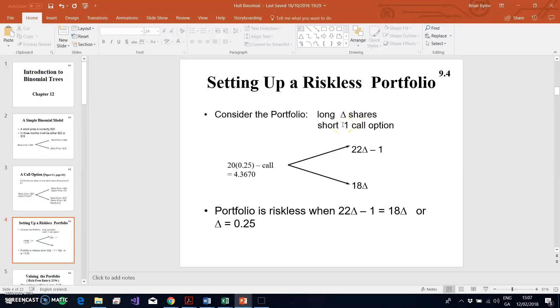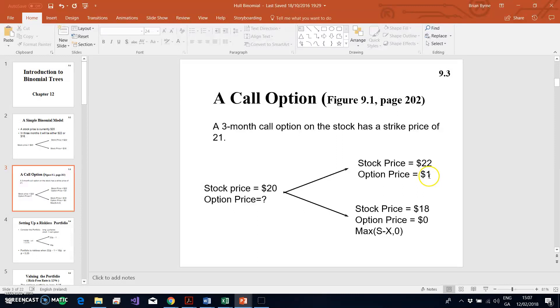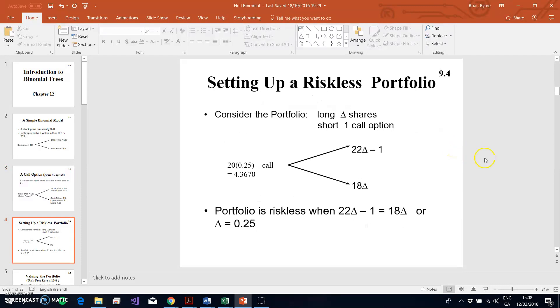How much stock should we purchase or acquire so that in the event of the stock price going up or down, the value of the portfolio is the same regardless of the movement in the stock price? In this replicating portfolio we take a delta position in the stock and a short position in the option.